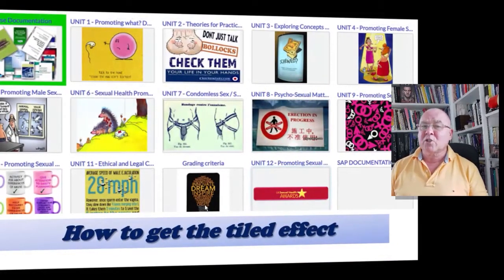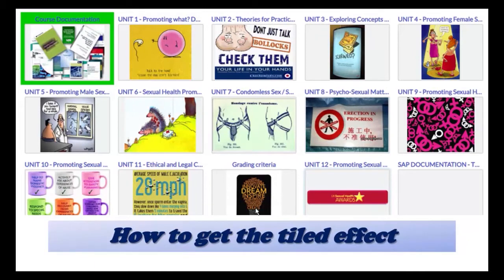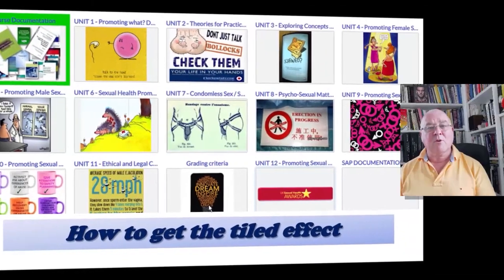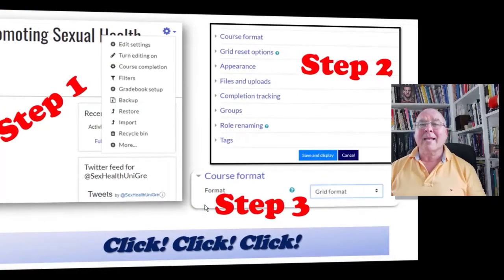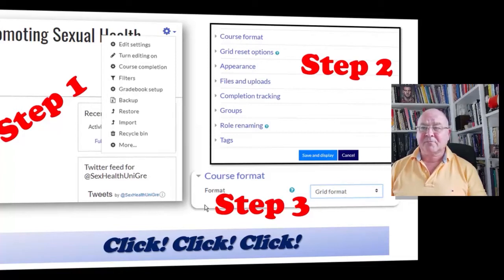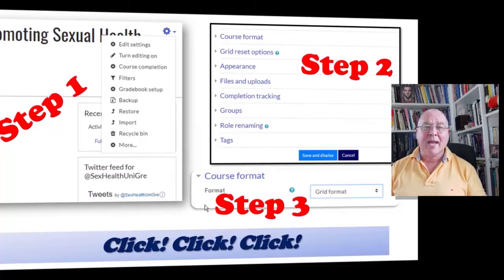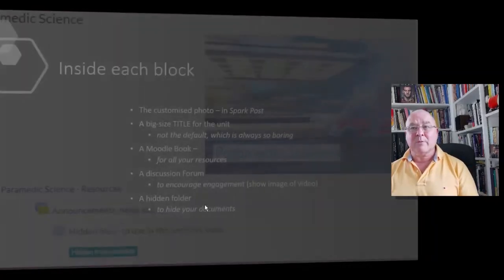This isn't some strange site you're looking at — this is just one of my courses showing the tiled effect. How do you get from that boring default image to this? The next slide shows you how, and it only takes a matter of seconds to change. Here are the three steps: first, click the cog for editing your site and choose 'Edit settings.' Then go to 'Course format' and select the grid view option. There are others available too, so play around and see which works best for you.